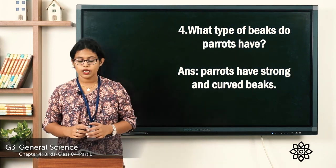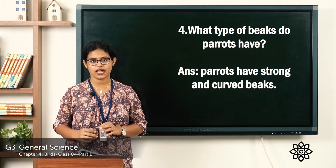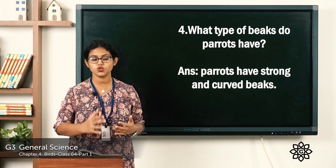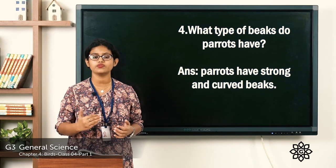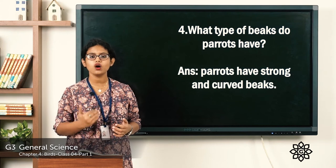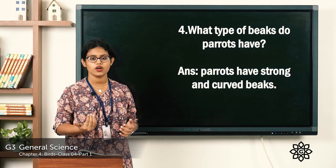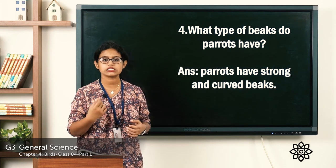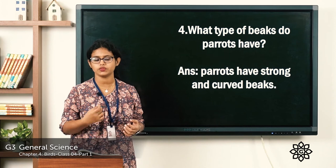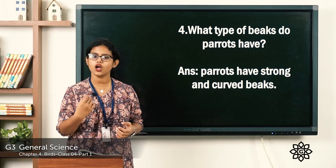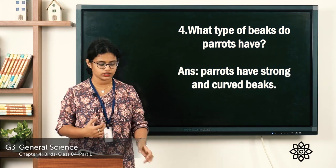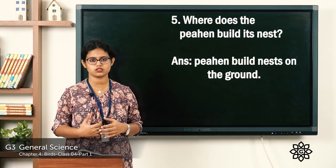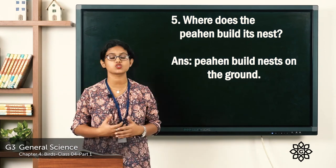Question four: what type of beak do parrots have? We learned that different birds have different types of beaks depending on the food they eat. Parrots have a strong and curved beak, which helps them eat seeds and fruits by breaking them open. Question five: where does the peahen build its nest? The peahen builds its nest on the ground.